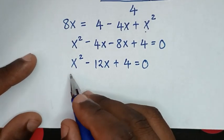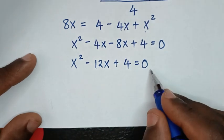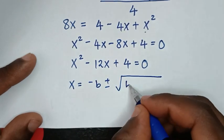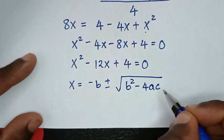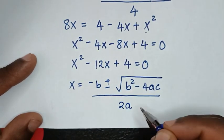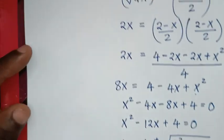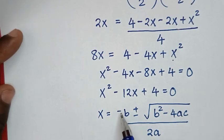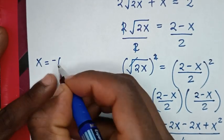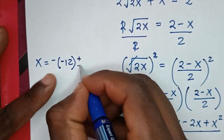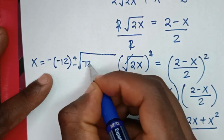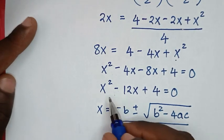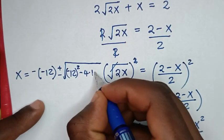We apply the quadratic formula: x = [-b ± √(b² - 4ac)] / 2a. Here b is -12, so -b is 12. We have √[(-12)² - 4 × 1 × 4] where a = 1 and c = 4.